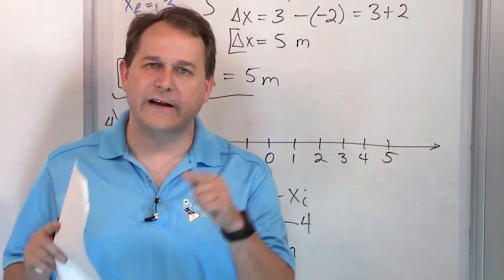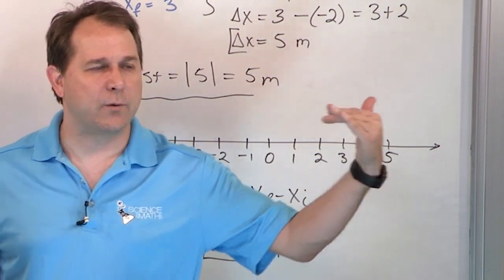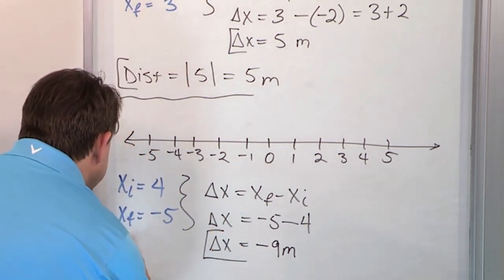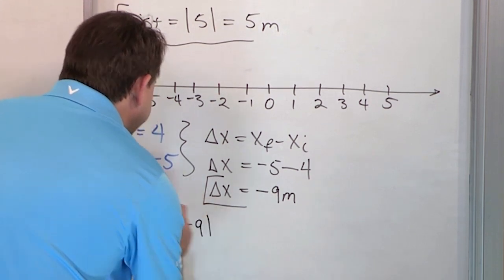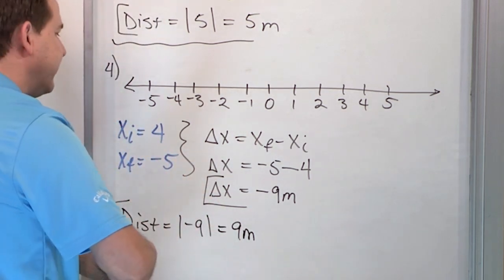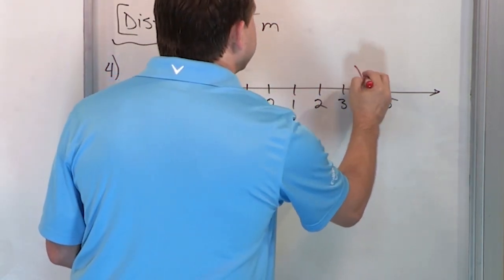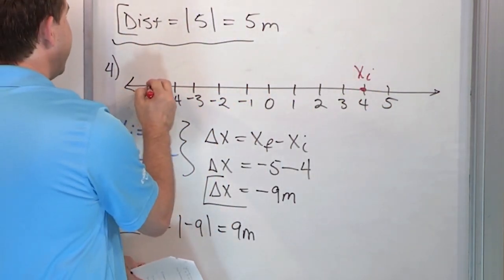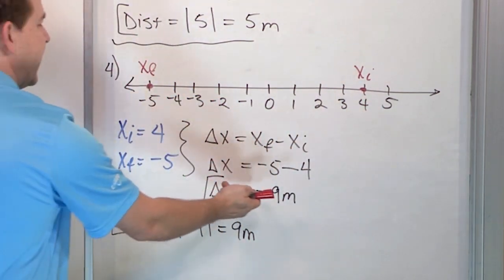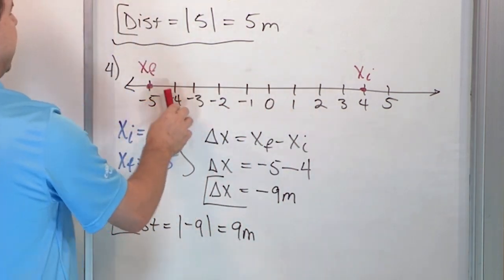What does this mean? It means between start and finish I moved nine meters, but the negative sign means I moved nine meters to the left — I walked backwards in the negative direction. The distance is just the absolute value of that displacement, which is nine meters, because distance is always positive. Now let's verify: the initial value was at four, the final value was at negative five. I started here and moved to the left — the negative sign confirms that. Counting one through nine units to the left confirms it's nine.